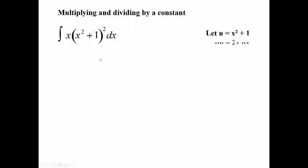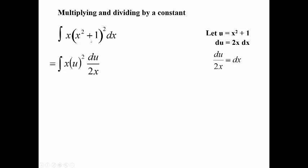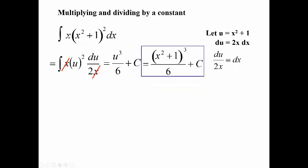Still let u be the inside: u = x² + 1. The differential: du = 2x dx, then divide over to get dx = du/(2x). Plugging in: integral of x · u² · du/(2x). The x's cancel, leaving u² du/2, which is a simple general power rule. This integrates as u³/3, and with the 2 in the denominator you get u³/6. Finally, plug back in: (x² + 1)³/6 + C. Being off by a constant is fine.